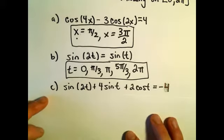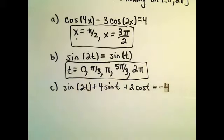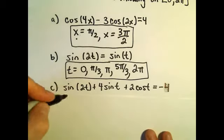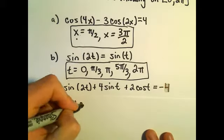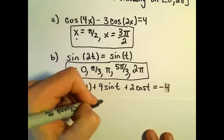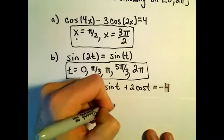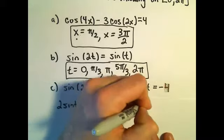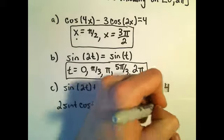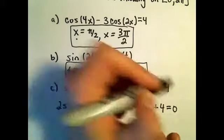Again, not everything, but you're going to have tricks to do as many problems as you can. So I'm going to replace the sine of 2t here with 2 sine t times cosine of t plus 4 sine t plus 2 cosine t. What I'm going to do is add the 4 to both sides.